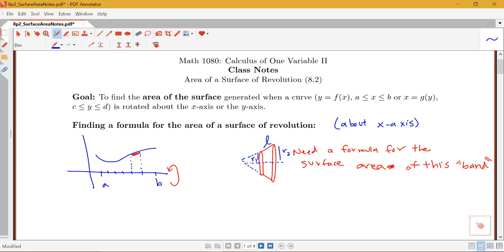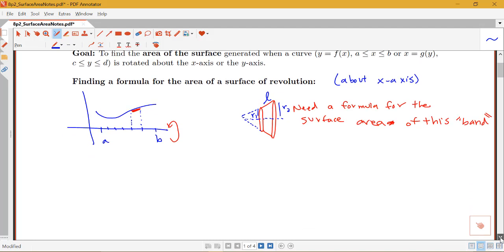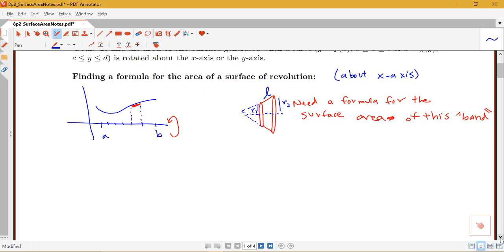could actually be found if I knew what the surface areas of these two cones were. If I could take the big cone surface area minus the small cone surface area, that would give me the surface area of the band that I was looking for. So let's go through that a little bit. And that'll show us a big part of where our integrand is going to come from in our formula for surface area.